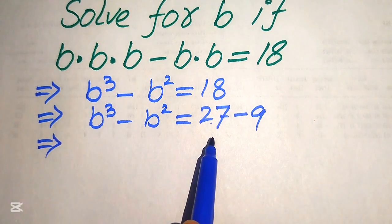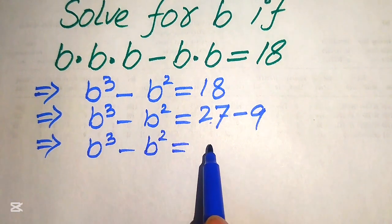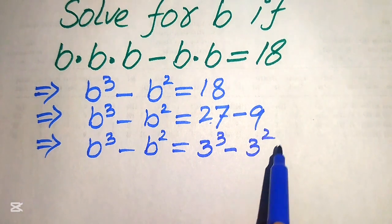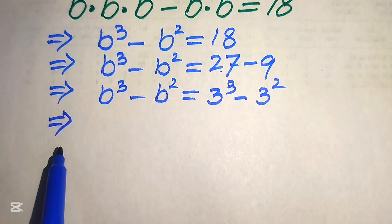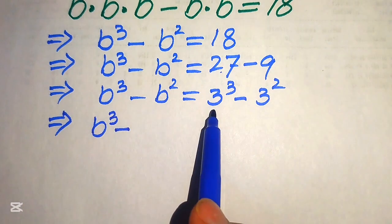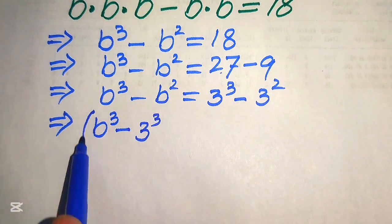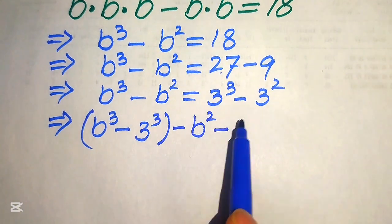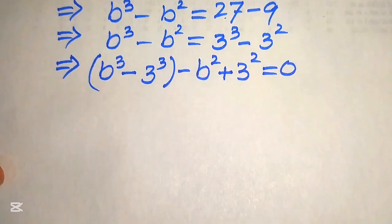We write the right-hand side terms in prime factor form: 27 equals 3 cubed and 9 equals 3 squared. We pair the cubic term with the cubic term and the square term with the square term, giving us b cubed minus 3 cubed minus b squared plus 3 squared equals 0.